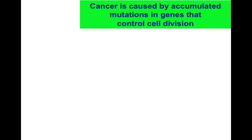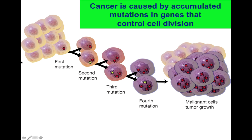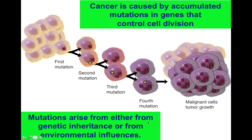Cancer is caused by accumulated mutations in genes that control cell division. If you start out with healthy cells and accumulate one mutation, and then a second, and then a third, you can transform your cells into a cancerous phenotype, which can eventually become malignant and proliferate and end up causing cancer throughout your body. Mutations can arise either from genetic inheritance or from environmental influences. If you have a genetic predisposition to cancer, you start out with a population of cells all of which carry already a mutation in it.